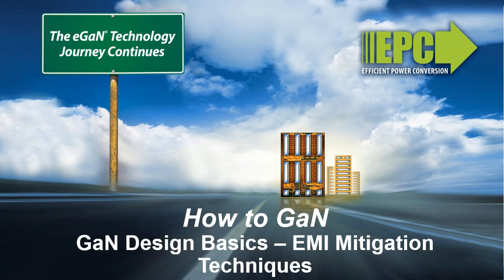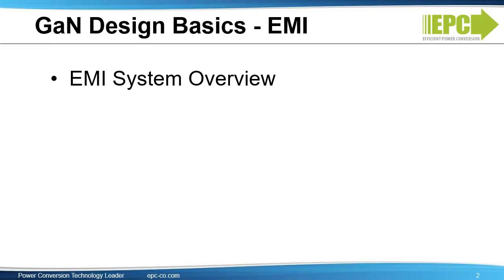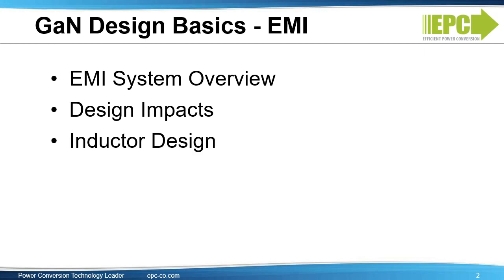In this video in our How to GAN series, we will discuss EMI mitigation techniques for consideration when designing switching converter systems using eGaN FETs and ICs, including passive components. We will start with an overview of an EMI system, then discuss the effects of specific design choices on EMI generation and propagation, such as layout, rise-fall times, and reverse recovery. Lastly, our friends from Würth Electronic will present the impact of inductor choice and placement on EMI propagation and mitigation.